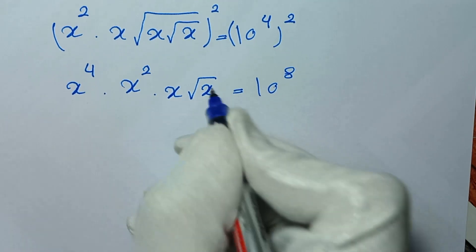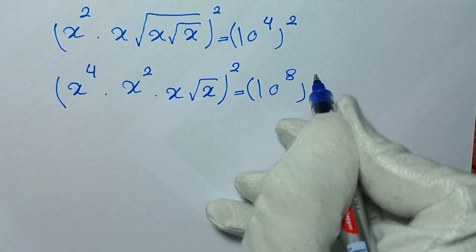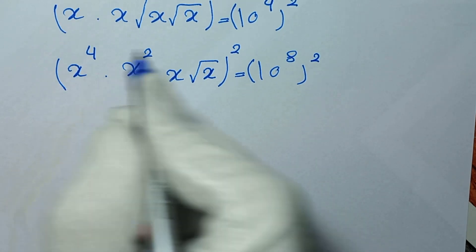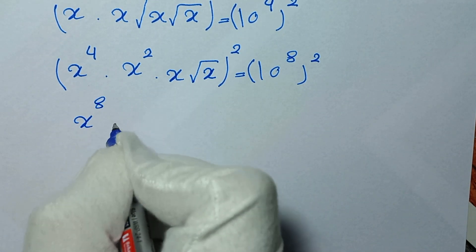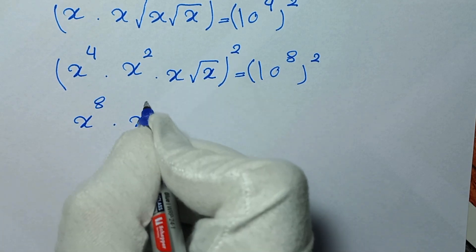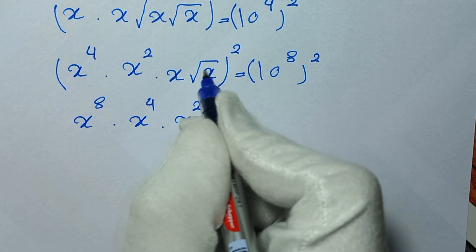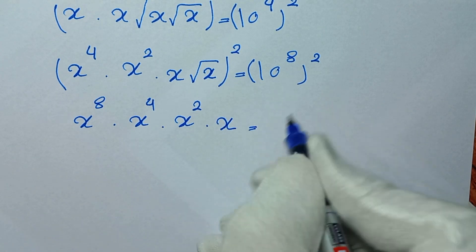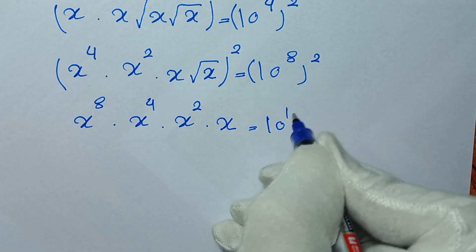In the next step, again we square both sides of the equation. So this to the power of 2 and this to the power of 2. It will be x to the power of 8 times x to the power of 4 times x squared times x equals 10 to the power of 8 times 2, which is 10 to the power of 16.